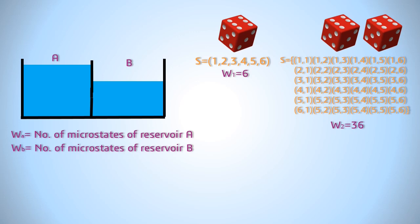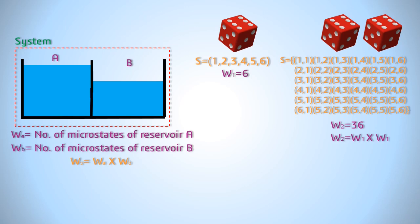If we have a pair of dice then the number of states in this combination increases drastically to 36. Note that the number of states is now product of two single dice. Similarly, if we consider combination of both the reservoirs as one system then the number of microstates of our system will be WA into WB. Boltzmann observed that entropy is related to the number of microstates and he gave the formula entropy is equal to k times log of W where k is Boltzmann's constant and W is the number of microstates.